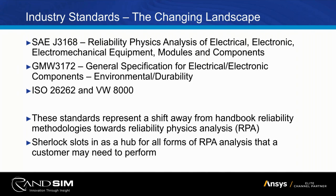The industry is moving toward understanding how an assembly actually behaves in its specified operating environment, rather than extracting performance metrics from a previous application. The GMW 3172 specification calls for these analyses to be run on all kinds of GM subcontractor components, and is a push GM is making towards complete virtual validation of their equipment prior to doing any kind of testing.